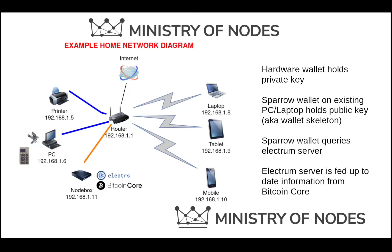Sparrow will then reach out to your node box, connect up with your electrum server, and query against it to show you the status of your wallet and broadcast your transactions. The Electrum Rust server will then query Bitcoin Core to keep that information up to date. So that's the sequence of traffic in the environment.